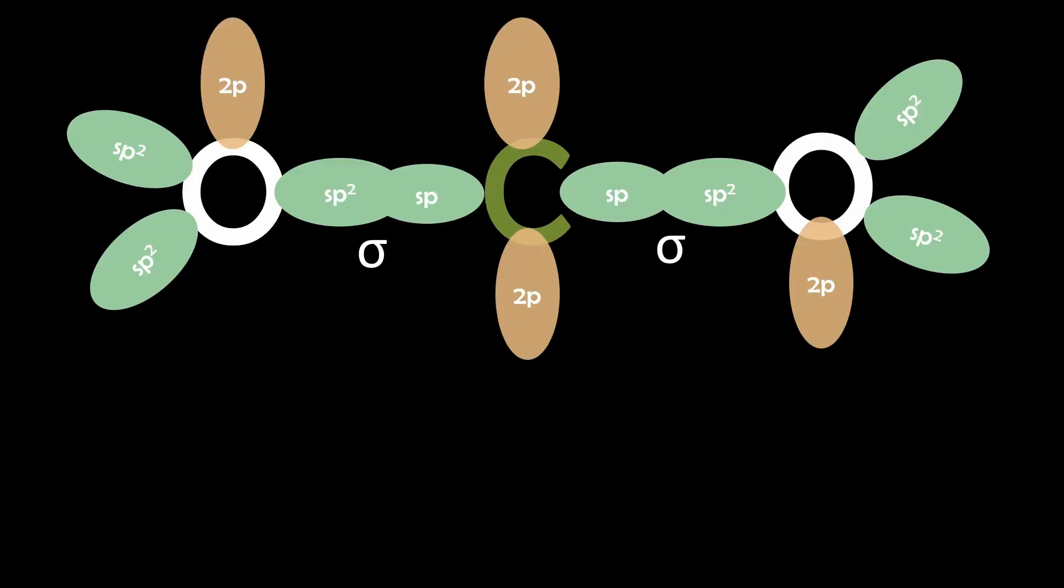But for now, these equivalent hybridized orbitals lead to the formation of sigma bonds between the atoms. The two remaining unhybridized P orbitals on carbon can now overlap perpendicularly with the unhybridized P orbitals of oxygen forming two pi bonds.